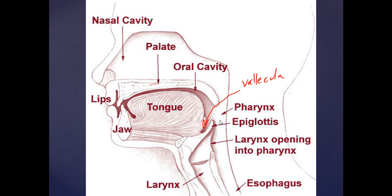You've got your pharynx, which is the posterior portion of the mouth. Then you've also got your opening to the larynx — that's going to be more of your vocal cord area, your voice box in layman's terms. And then posterior to your trachea you've got your esophagus. During an intubation, what you're going to be doing is accessing your endotracheal tube and sticking it down in between your vocal cords.